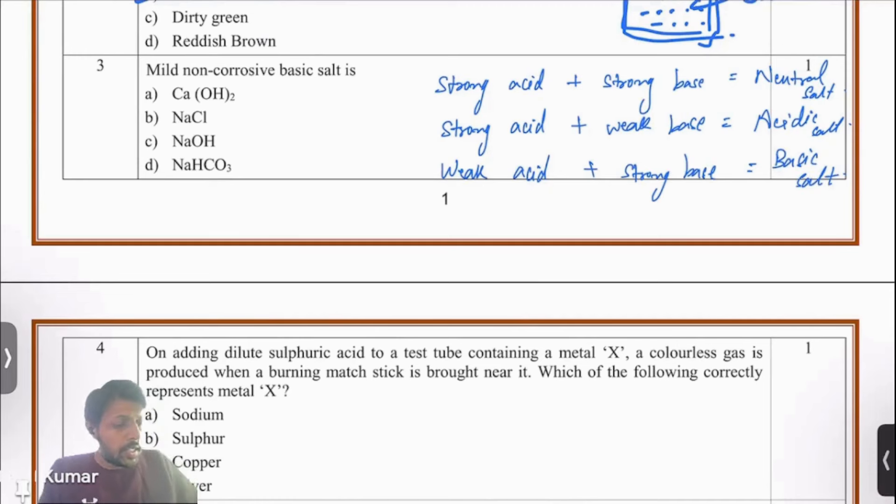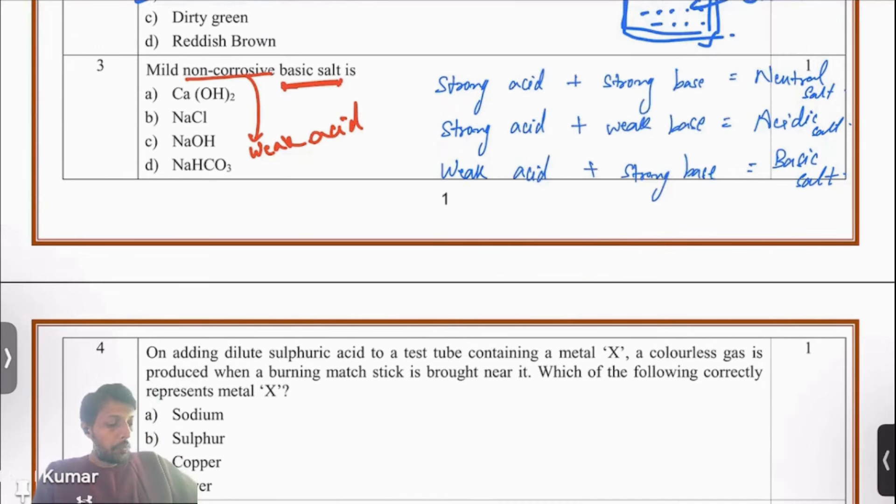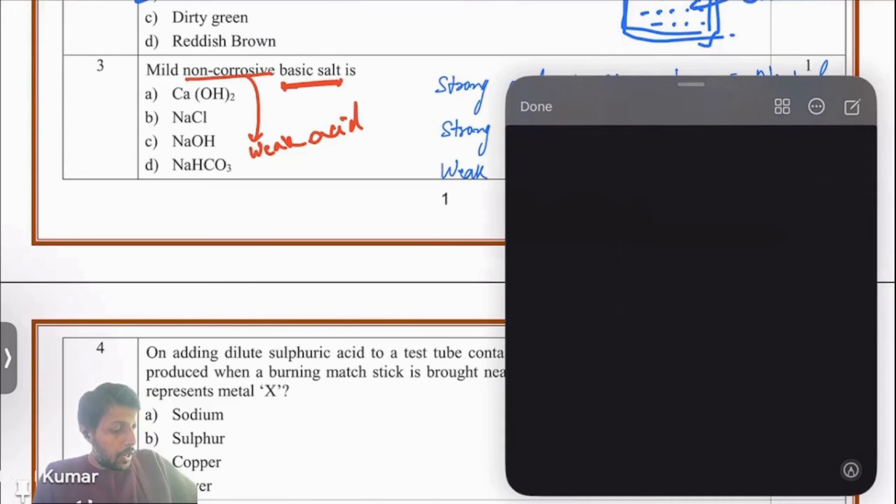The question is asking which of these is a non-corrosive basic salt. If it's non-corrosive, it has to be weak. When you dissolve it in water, it should result in either a weak acid or a weak base, most probably a weak acid. Let's try dissolving all of these four salts and see what we are getting. Calcium hydroxide - it's not even a salt, it's a base. So this is not our answer.